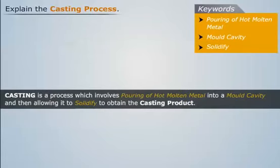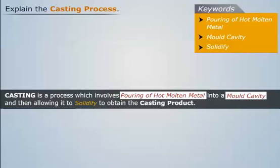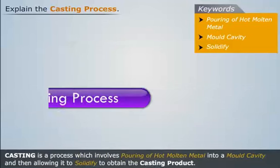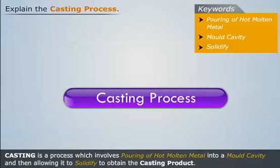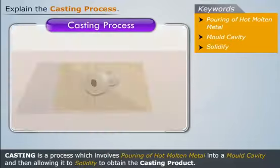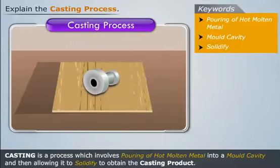Casting is a process which involves pouring of hot molten metal into a mold cavity and then allowing it to solidify to obtain the casting product. To understand the casting process, let us make this material through casting.